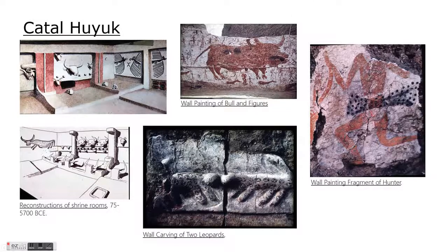A couple of things to point out about what we find in Çatalhöyük: first, we see a lot of evidence of continuity with Paleolithic art. Looking at these wall frescoes — like this painting of bulls and figures — we see a similar celebration of hunting and gathering, even though this was an agricultural community. There's a celebration of animals, wild animals, and especially of bulls and bison. Also, if you look at this reconstruction of a shrine room, it incorporates sculptures based on bulls as well as actual bull horns as part of the decorations.